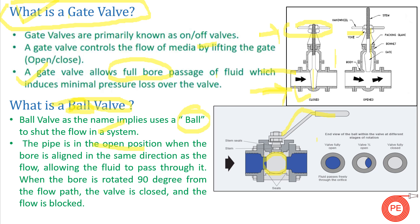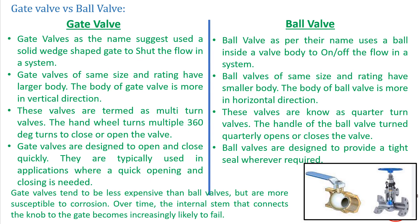In a ball valve, we can have 100% flow, and we can also use it for throttling purposes. For example, if 70% of the hole is in line with the flow and 30% is closed, it can be used for throttling. It can also be used for a complete shut-off when the hole is against the direction of the flow. This is the basic concept of a ball valve.